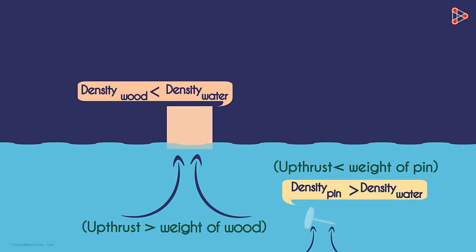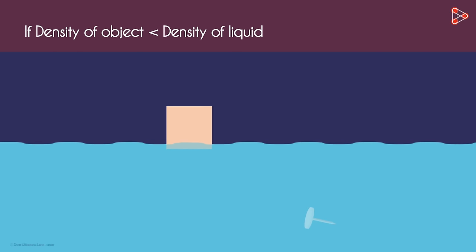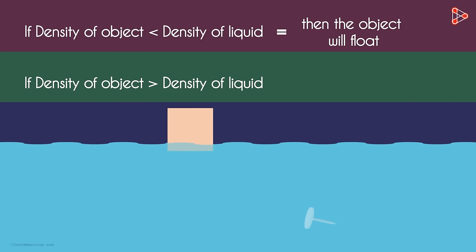So what can we conclude? If the density of an object is lesser than the density of the liquid, then it will float. And if the density of an object is more than the density of the liquid, then it will sink.